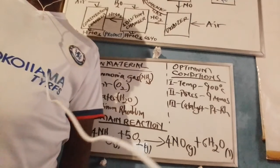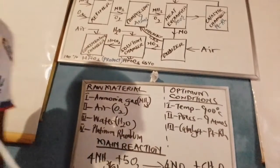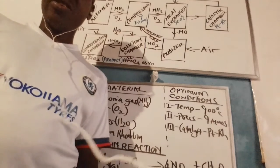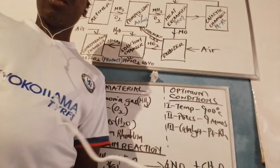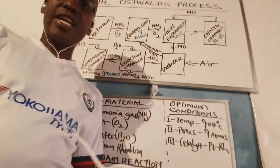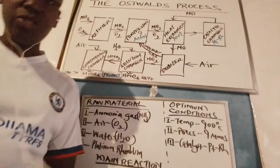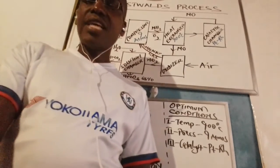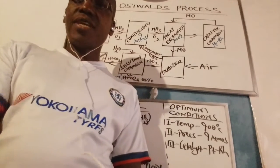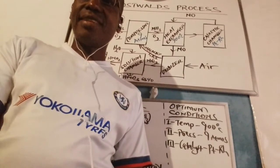This is a critical process. It's important because nitric acid has a wide range of chemical applications. Thank you. That has been the description of the Ostwald process, the process for the large-scale manufacture of nitric acid.